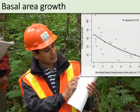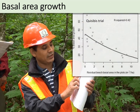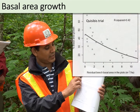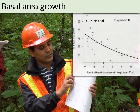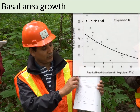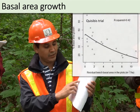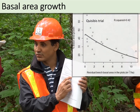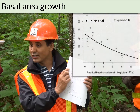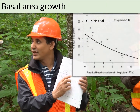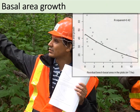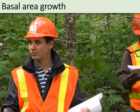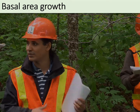This graph shows on the x-axis the residual beech basal area in the plots in meters square per hectare, and on the y-axis the percent basal area growth. We can clearly see the trend that as we have higher beech basal area in the residual stand, the plot level productivity is declining. It's obvious that it's probably because of beech bark disease — when you have more beech in the stand and it is not growing, we are losing the productivity.